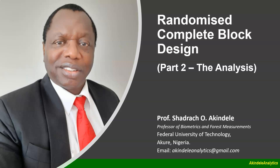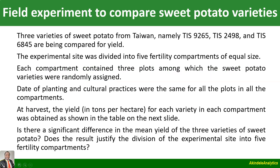In this video I'll be looking at how to carry out the analysis of data from a randomized complete block design. I will start with this example — a field experiment to compare sweet potato varieties. Three varieties of sweet potato from Taiwan, namely TIS 9265, TIS 2498, and TIS 6845, are being compared for yield.